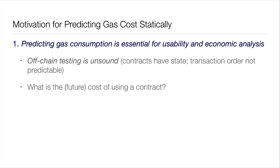Why are we interested in predicting the gas cost statically? You could run a transaction offline before executing it to see the gas cost, but this is unsound because contracts have state and you can never be sure when your transaction is executed. You might also be interested in the cost of interactions with a contract in the distant future for economic analysis — do you want to start using this contract if it has very high gas costs in the future? That's difficult to test.